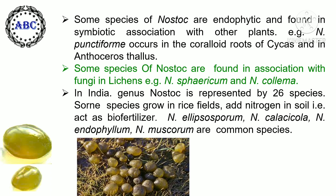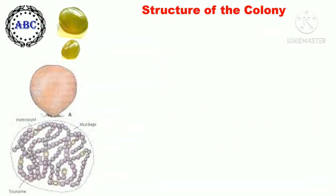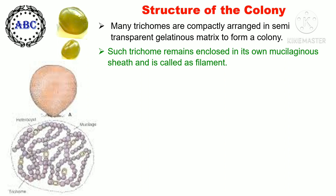Some species grow in rice fields and fix nitrogen in soil, acting as a biofertilizer. Nostoc ellipsosporum, Nostoc calcicola, Nostoc endophyllum, and Nostoc muscorum are common species found as biofertilizers.